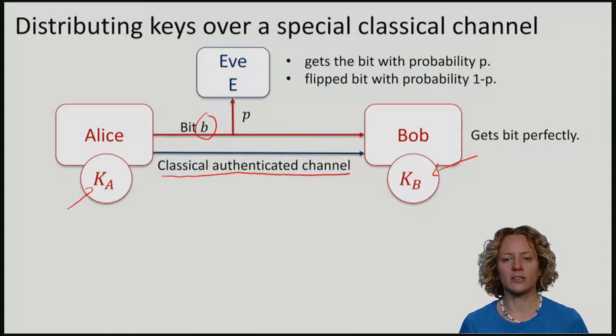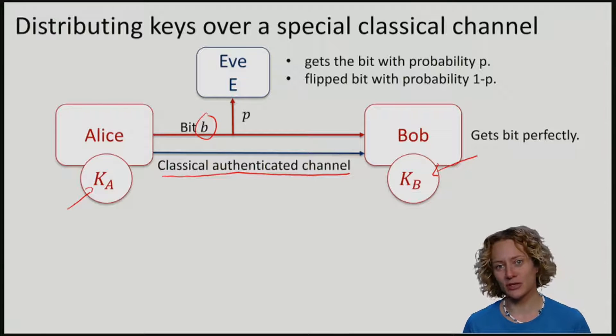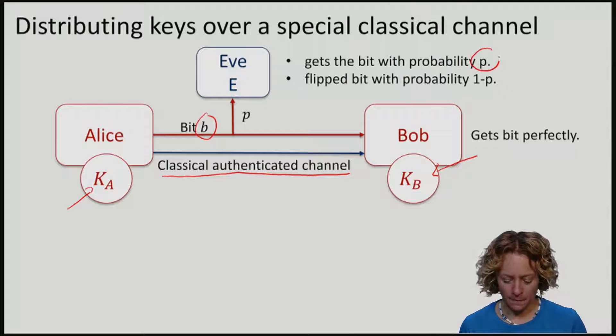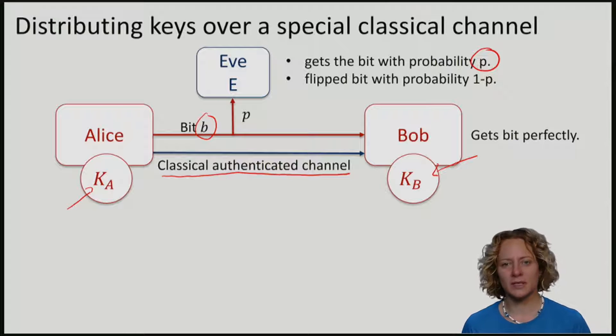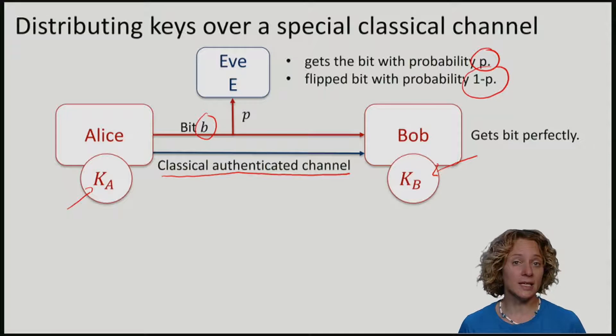Here, we have artificially introduced a restriction on the eavesdropper, Eve. Eve gets the bit with probability p and she gets a flipped version of the bit with probability 1-p. Eve essentially has a noisy version of the bit.